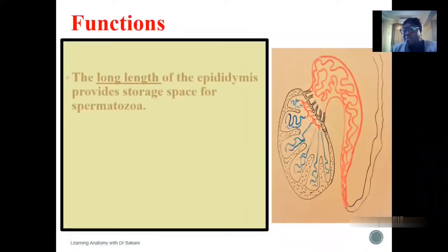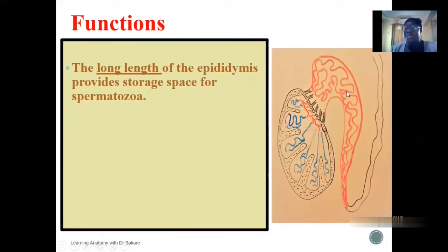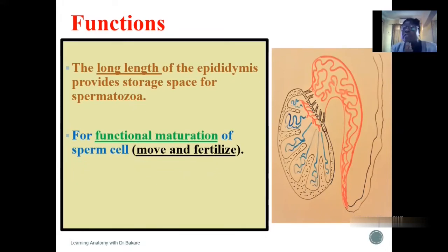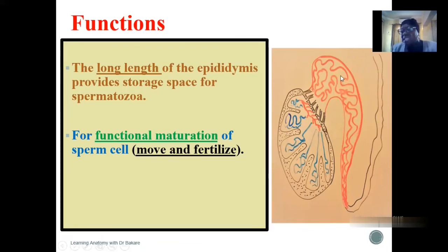The functions of the epididymis: because it is a very long tube that coils over itself, this long presentation allows for storage ability — there is more space to store sperm. So it acts as a storage medium for the semen. Also during the phase of storing, the sperm undergoes functional maturation in terms of being able to move and also being able to fertilize an egg. Before the sperm gets to the epididymis, it is not able to assume its motility or its ability to fertilize an egg. But as soon as it gets to the epididymis, secretions within this space enhance the motility and the ability of the sperm to fertilize an egg.